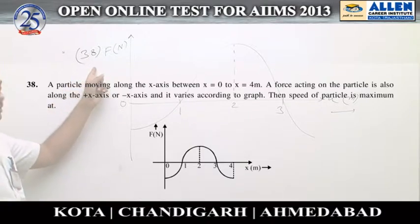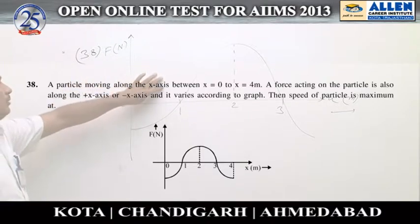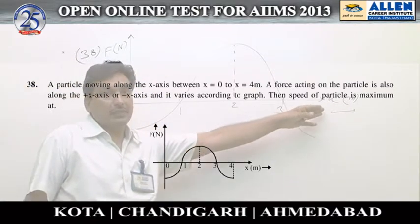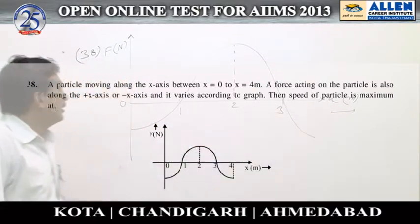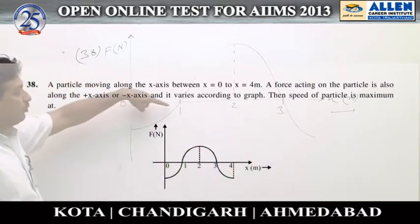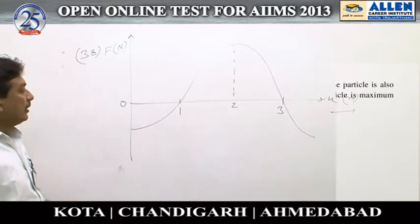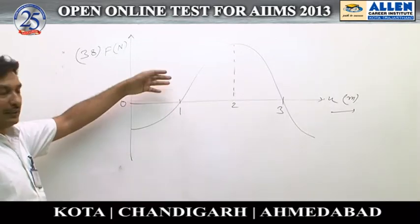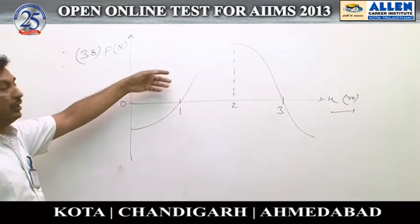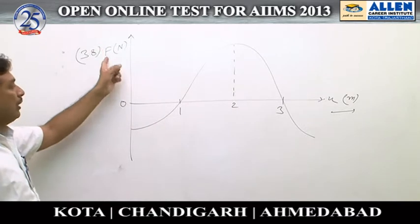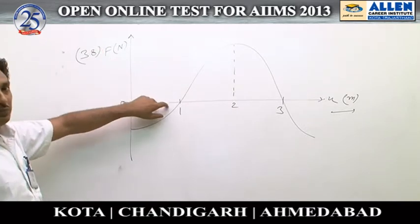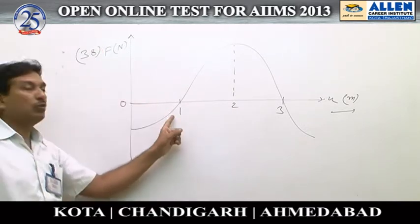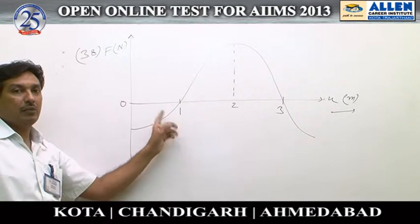In question number 38, a diagram is given between force and displacement x. At x equal to 1 meter, if we displace the particle on either side, the force will be along the direction of displacement.